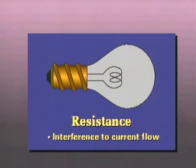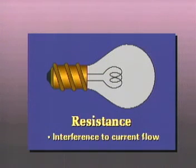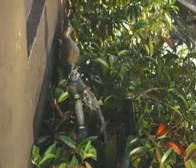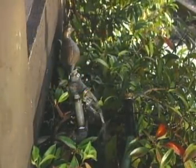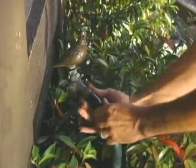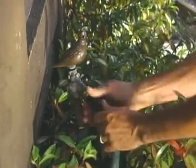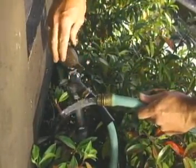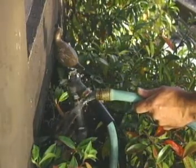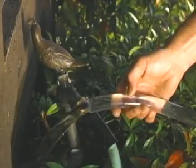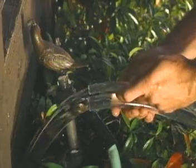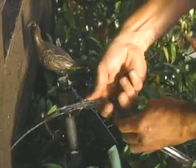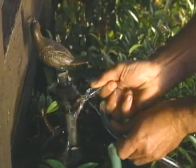Resistance is the interference to the flow of electrons. Since electrons are charged particles, we can also say that resistance is the opposition to the flow of charges. Resistance is the load that limits or controls the current. The hose, as well as the faucet, allows a certain amount of water to flow. The hose itself offers resistance because it allows some water to flow while limiting or opposing the flow of a greater amount of water. A smaller hose would further limit the amount of water flow. If we bend the hose, we create even more resistance to the flow.